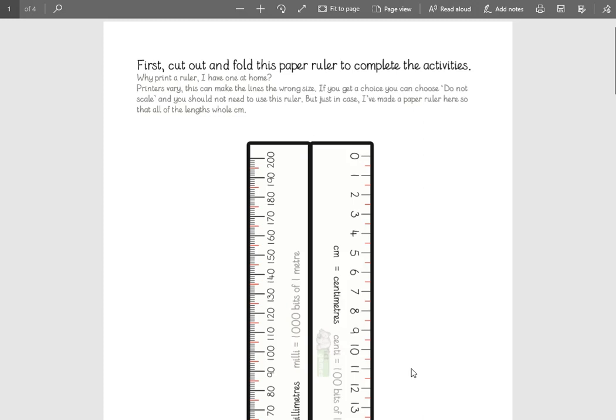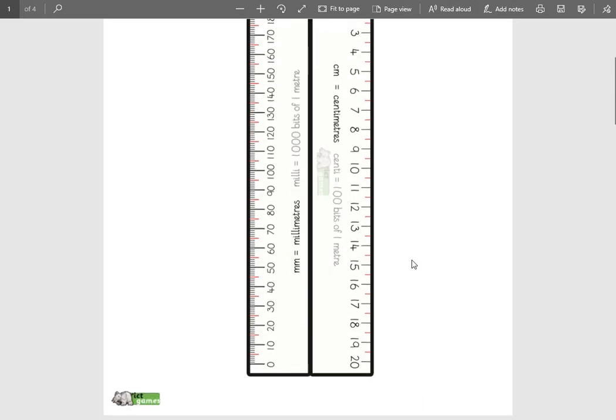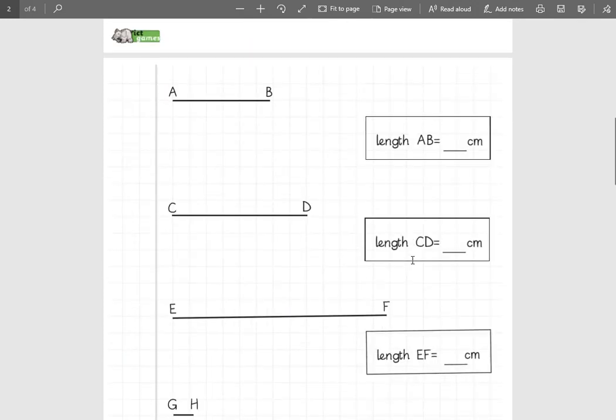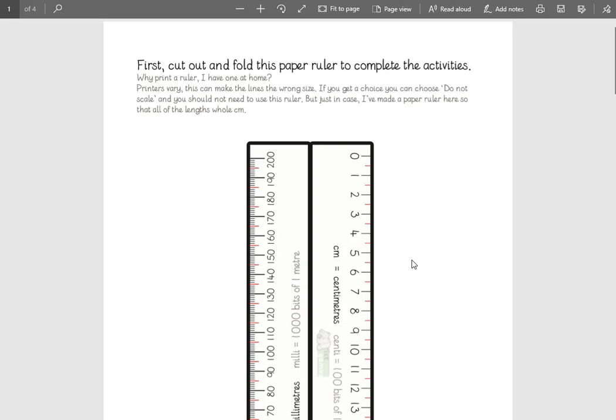Welcome to day 18 of the ICT Games Daily Dollop of Maths, keeping the math skills bubbling over for year one and year two while we can't be in school. Just to let you know that today is another one of those days when we've got something to print out if you want to, to go along with today's activities. It's the same as last time, it's got a paper ruler that you can print out and cut up, or if you did it yesterday you can use that one again, and there's some activities to measure.